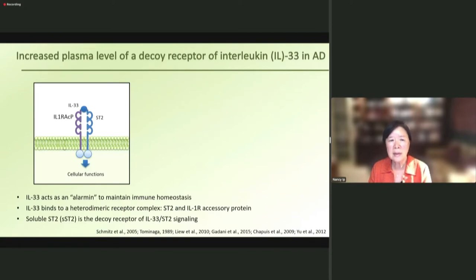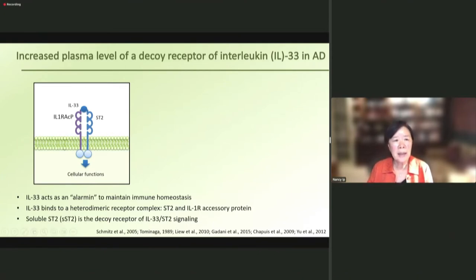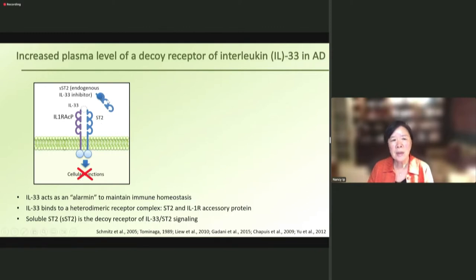I want to discuss our work on a cytokine called interleukin-33, IL-33. It is a member of the IL-1 receptor family and acts as an alarm in to maintain immune homeostasis. IL-33 binds to a heterodimeric receptor complex, ST2 and IL-1 receptor accessory protein. In addition to the membrane-bound form, there is also a soluble form of ST2 that acts as an endogenous IL-33 inhibitor — a decoy receptor that can inhibit the function of IL-33.